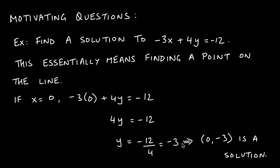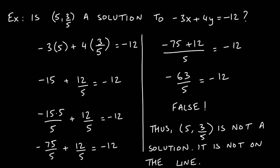Zero comma negative 3 is also a point on this graph. These are two equivalent concepts: finding a solution and finding a point on the line mean the same thing. Vice versa, if I give you a point and ask 'is this a solution to this equation,' that's the same as asking 'is this point on the graph of this line?'